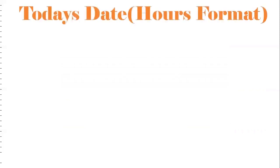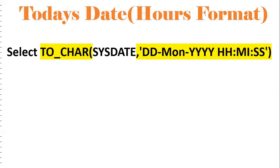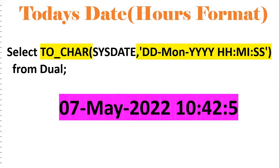Suppose I want to display today's date in a specific format. If you want to display in any format, we will use the TO_CHAR function. SELECT TO_CHAR(SYSDATE, 'DD-MON-YY HH:MI:SS') FROM DUAL. HH means hour, MI means minutes, SS means seconds. So if you run this, you get 7th May 2022, 10:42:58. If you want only hour, put HH. If you want hour and minutes, put HH:MI. Based on the company's requirement, you can display accordingly.